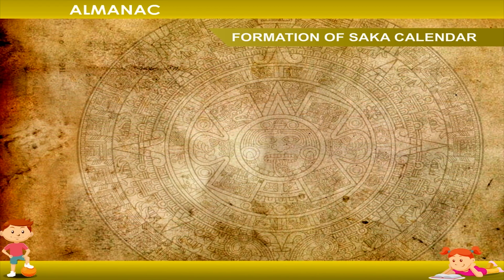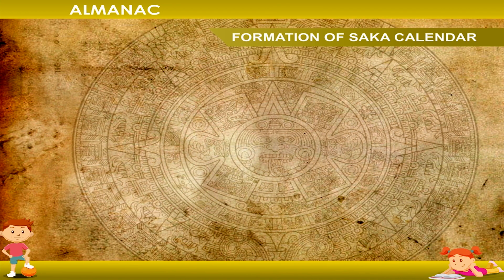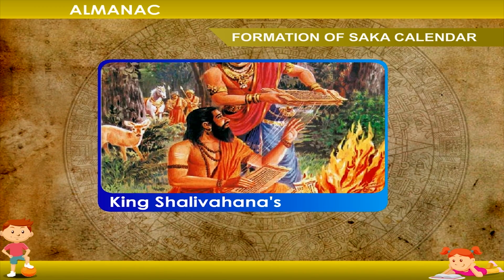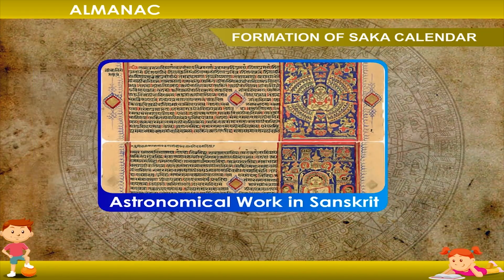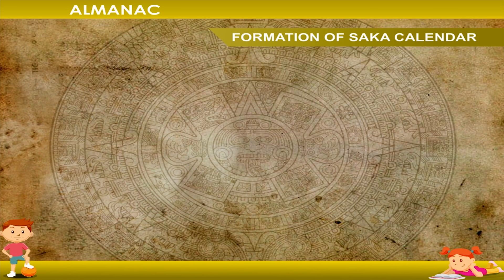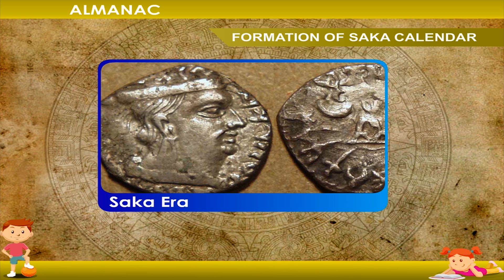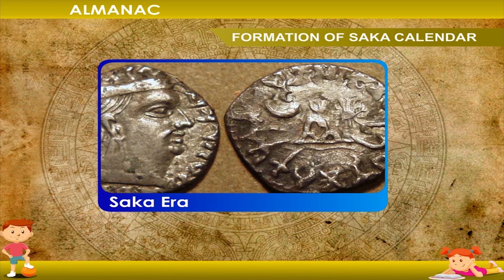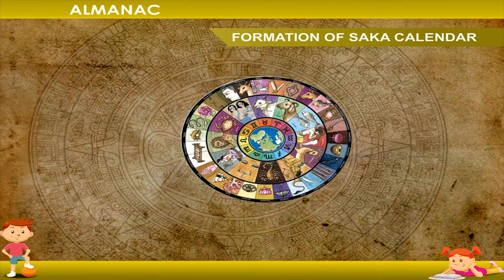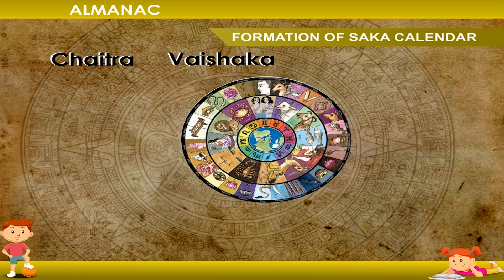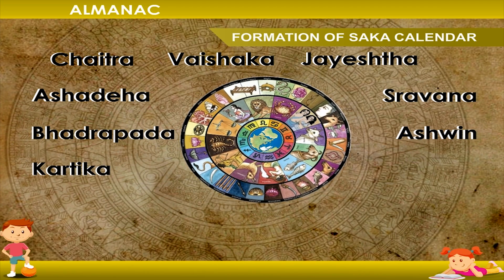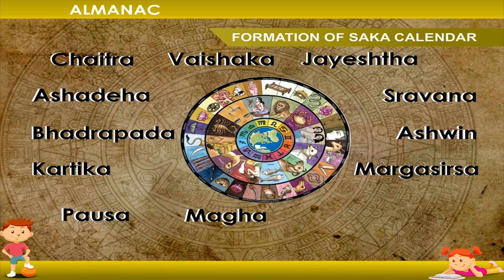Regarding the formation of the Saka calendar: the initial calendar period of India is the Saka era, which starts with King Shalivahana's accession to the throne. The Saka calendar is used for astronomical work in Sanskrit literature written after 500 AD. Its official use began from Saka era 1879, Chaitra 1, corresponding to March 22, 1957 AD. There are 12 months in the Saka calendar: Chaitra, Vaishak, Jaisht, Ashad, Sravan, Bhadrapad, Ashwin, Kartika, Margshirsa, Posh, Magh, and Phalgun.